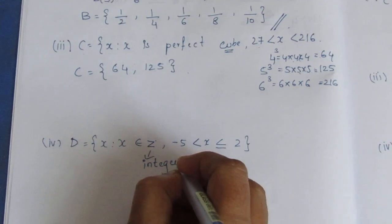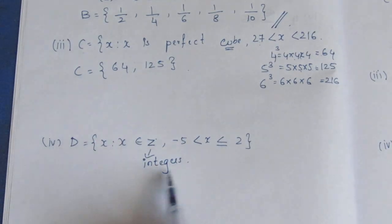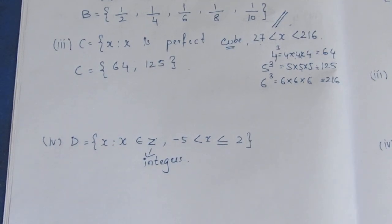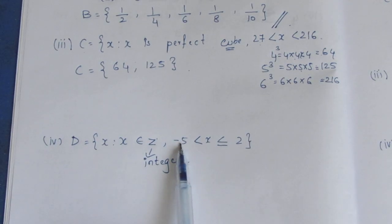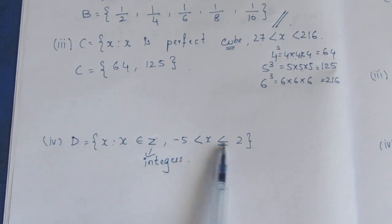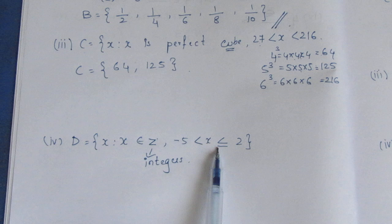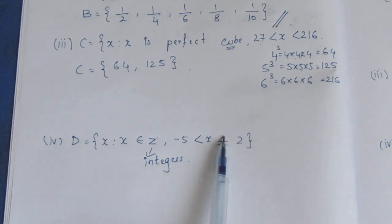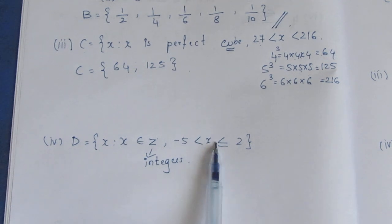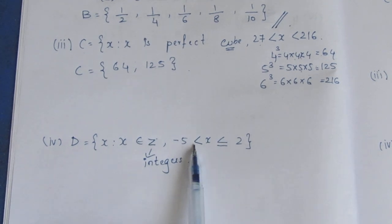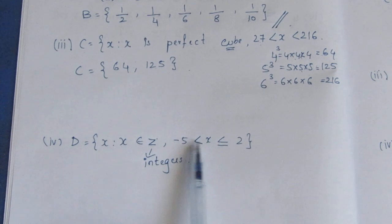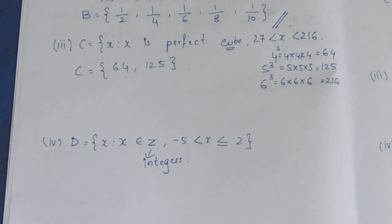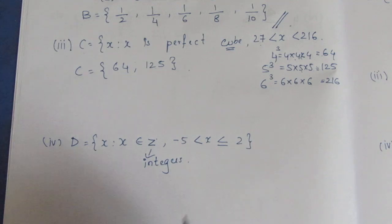If you want to write it, I will write it in the right direction. Integers: x is greater than minus 5, less than or equal to 2. x and the values are changing, so x is greater than minus 5 and less than or equal to 2.